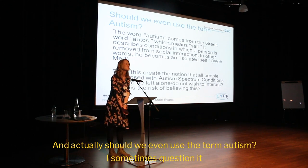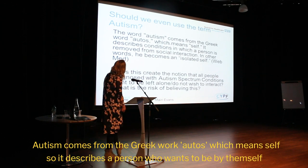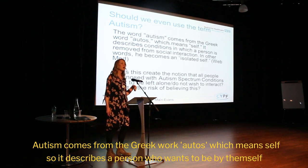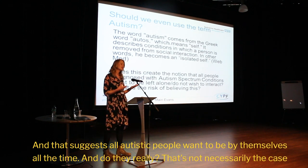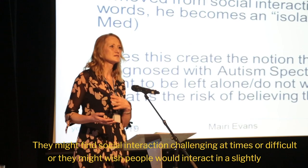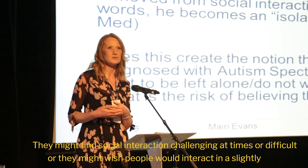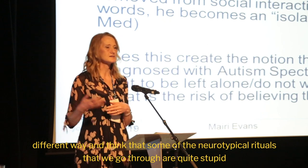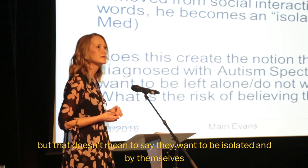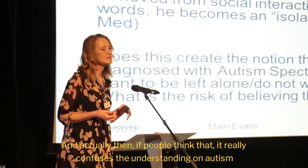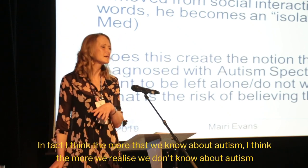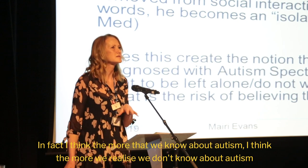Should we even use the term Autism? Autism comes from the Greek word 'autos', which means self — describing a person who wants to be by themselves. But that suggests all Autistic people want to be by themselves all the time, which isn't necessarily the case. They might find social interaction challenging, or wish people would interact differently, or think some neurotypical rituals are quite pointless. That doesn't mean they want to be isolated. And actually, the more we know about Autism, the more we realise we don't know about Autism.